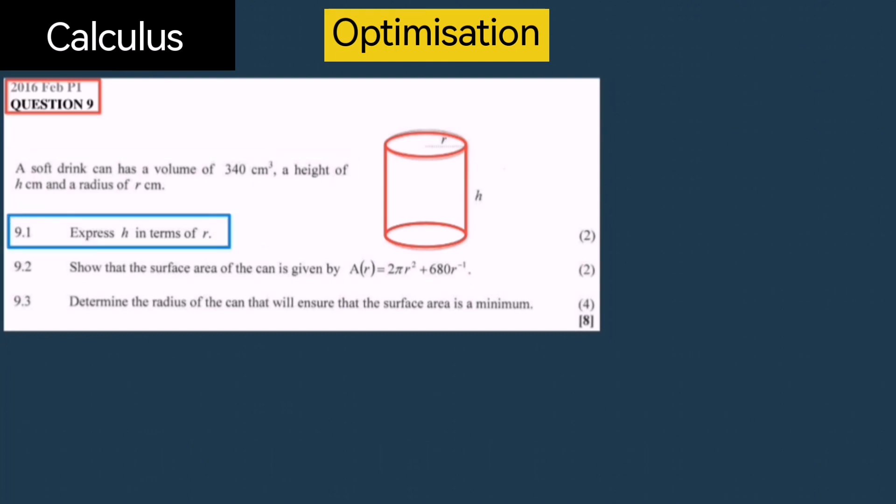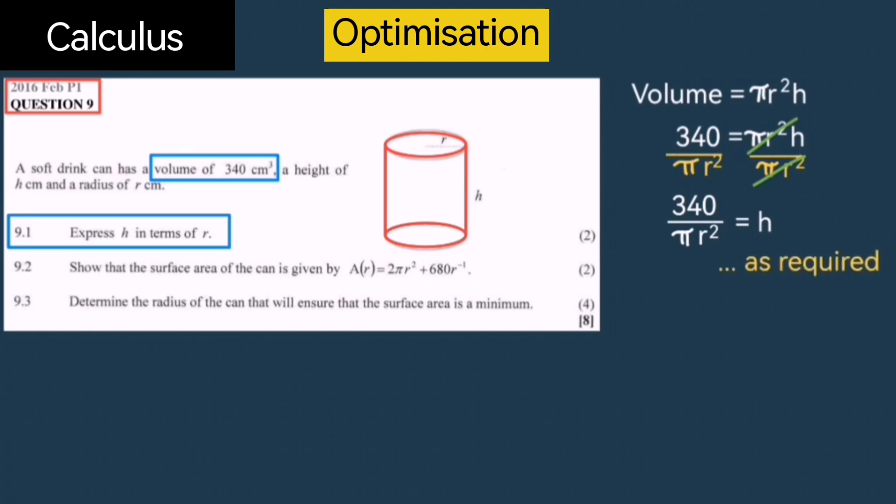Our first question is to express H in terms of R. In order to do this, we need to consider what was given to us in the beginning. We have the volume of the can. The volume formula for a cylinder is π r² times height. Divide both sides by π r² and that gives us H = 340 / (π r²). That's what was required.